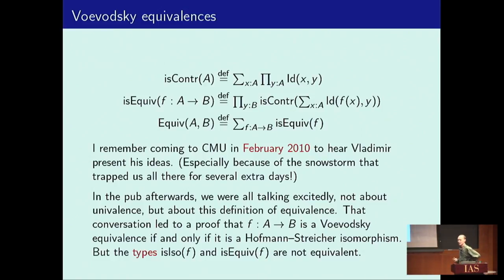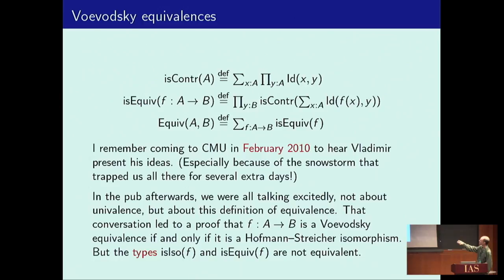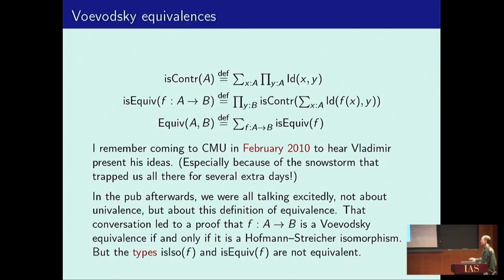We were all excited, not just about univalence, but especially about this definition of equivalence. The notion of equivalence says — if you parse this — it is a function assigning to every point in the base a witness of the contractibility of this type, which is the homotopy fiber of the map. So it's saying the homotopy fiber is contractible for every point in the base, and the type of equivalence is the type of functions which are equivalences in this sense.